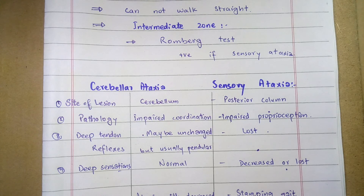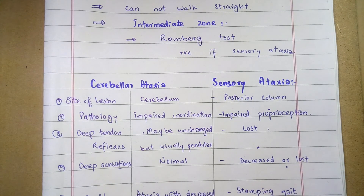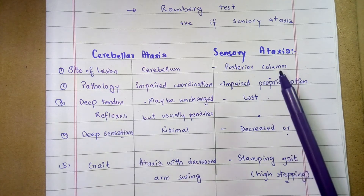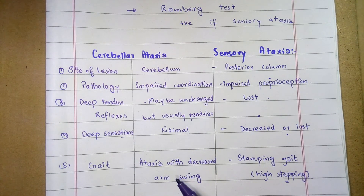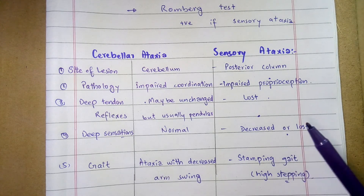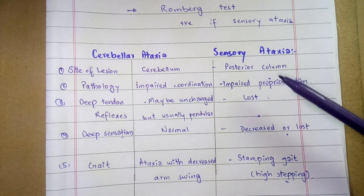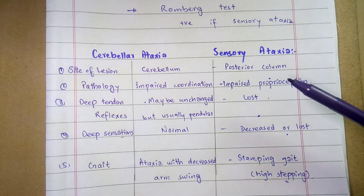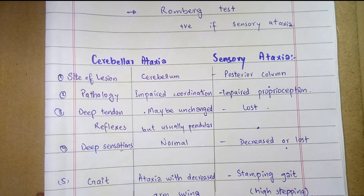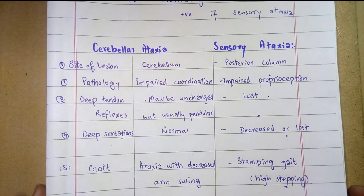Another difference is gait. In cerebellar ataxia, the gait shows decreased arm swing. In sensory ataxia, there is a high-stepping gait — a stomping gait — because there is no sensation from the feet due to damage of the dorsal column pathway. High-stepping gait is the characteristic feature of sensory ataxia.